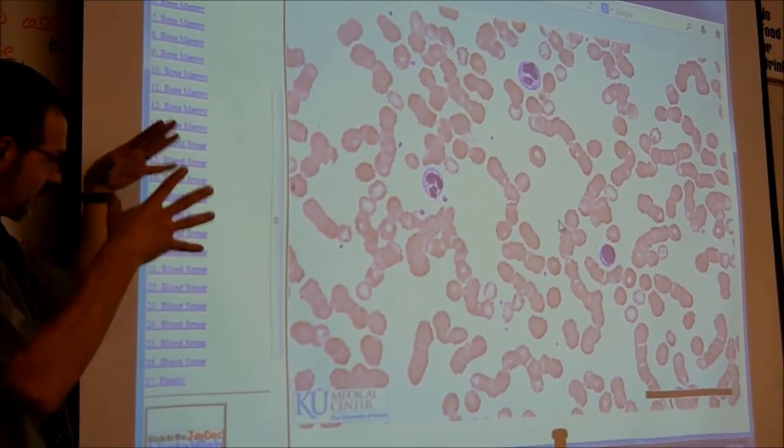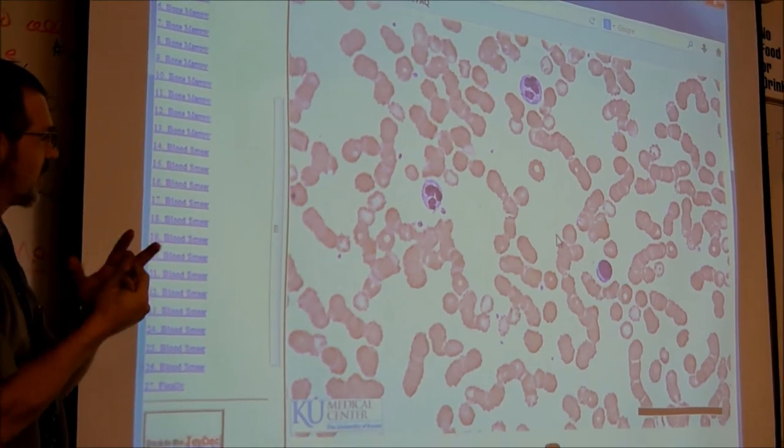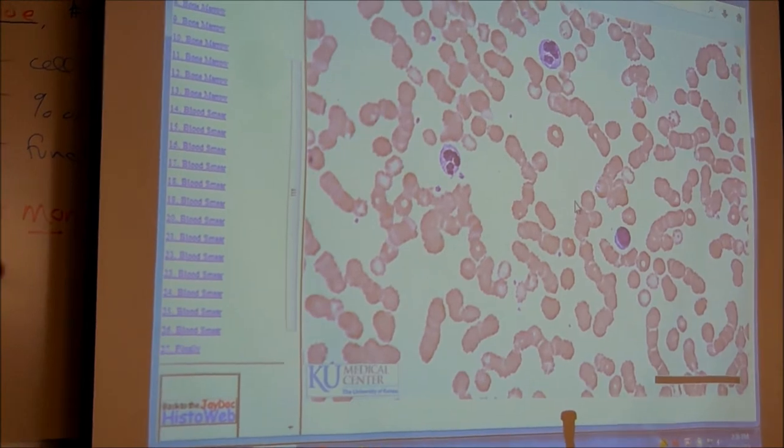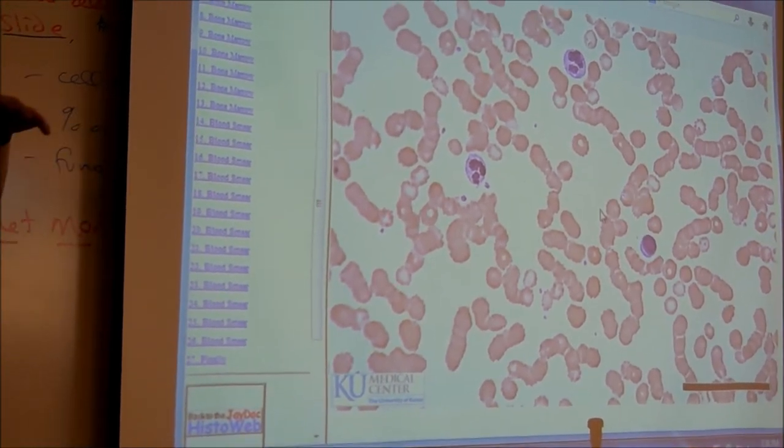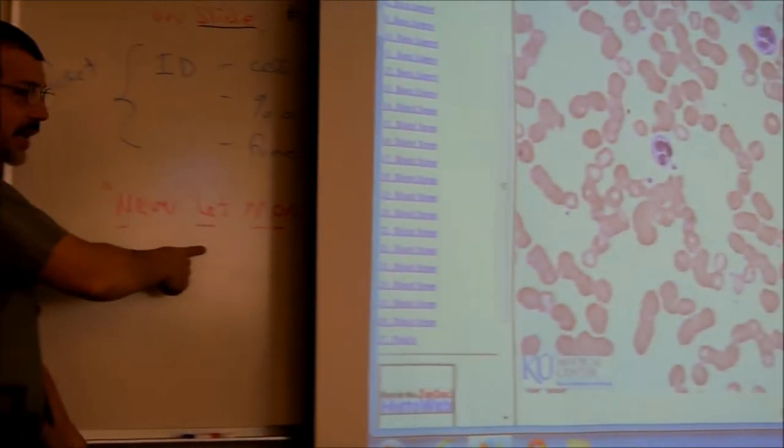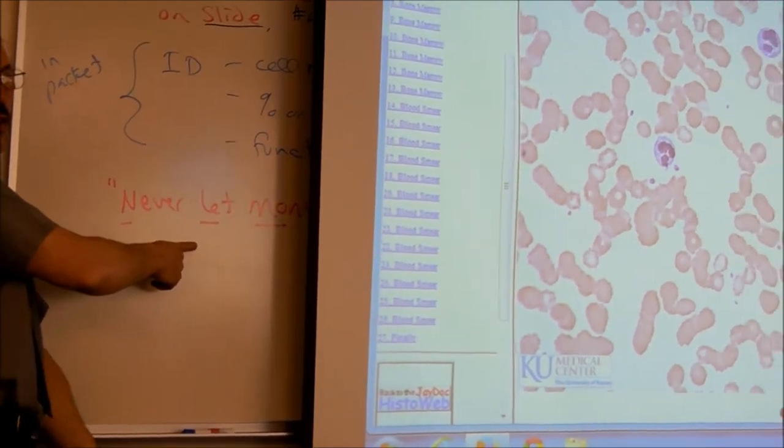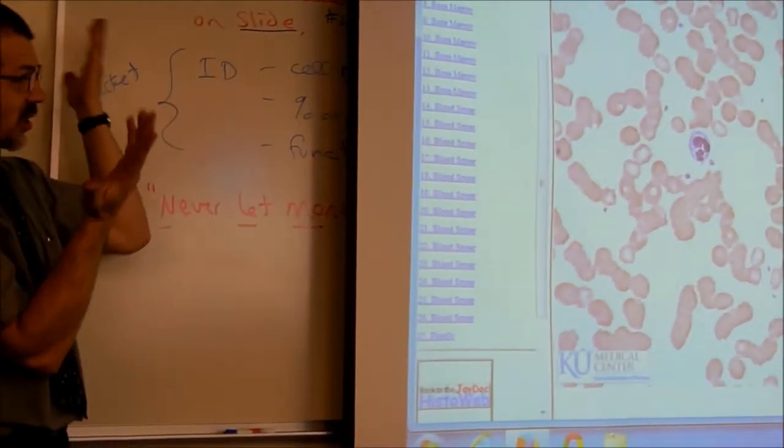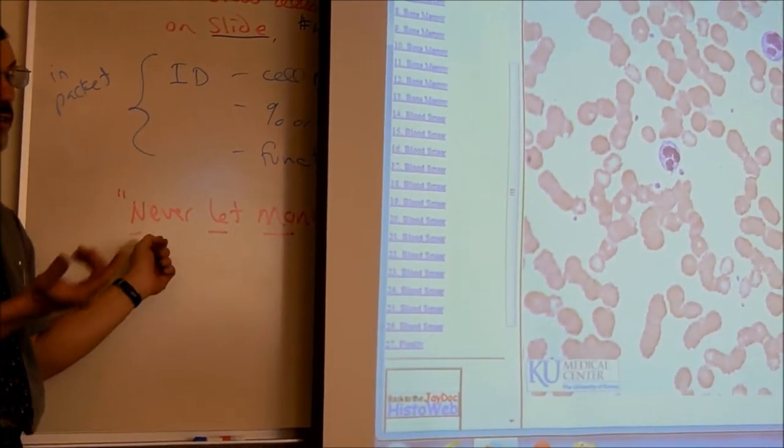So white blood cells, you want to remember, never let monkeys eat bananas. That's the order. So neutrophils most common, lymphocyte, monocyte, eosinophil, and basophils. So if in doubt, it's going to be a never or let. Those are over half of the cells. So if you just remember the order, you look. Well, just statistics say it should be a neutrophil in there somewhere.